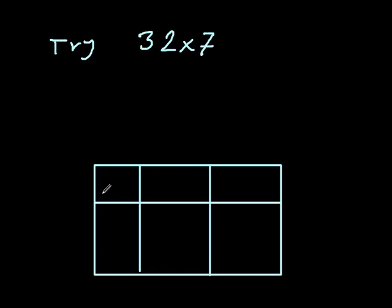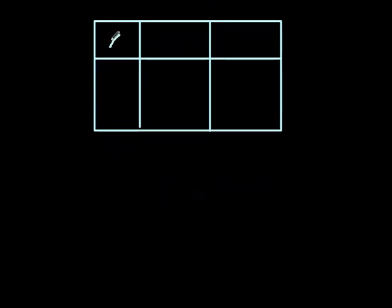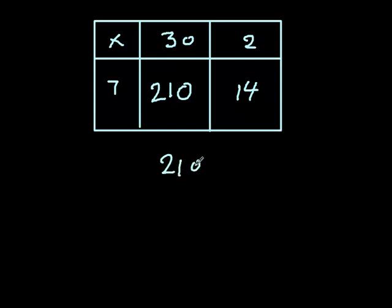How I did this question is I will split 32 up into 30 and 2, and 7 is going to go on this side. So 7 times 3 is 21 with a 0 for 30 and 7 times 2 is 14. And when I add 210 and 14, I get 224, which is the answer for that question.